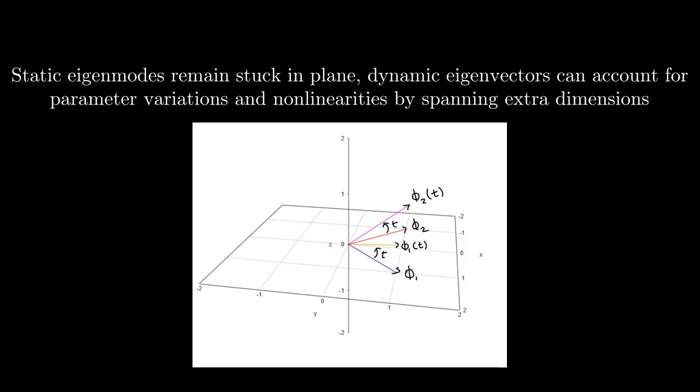Visualizing this in R3 now, we see our static eigenmodes remain stuck in the plane, while our dynamic eigenmodes are free to account for parameter variations in the higher modal space.